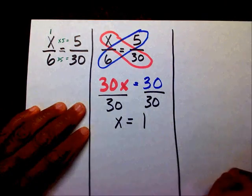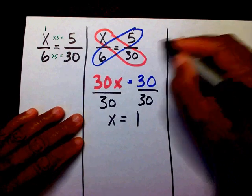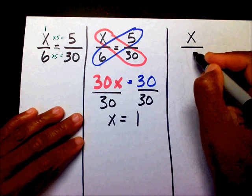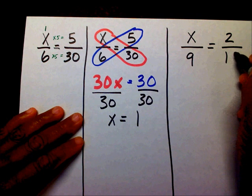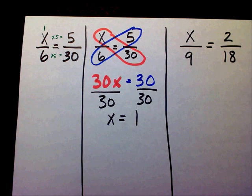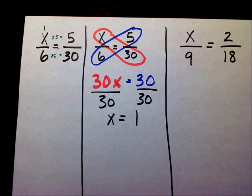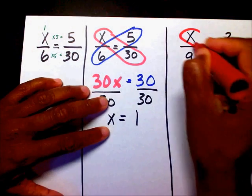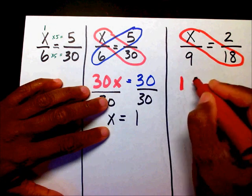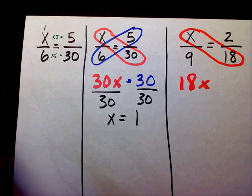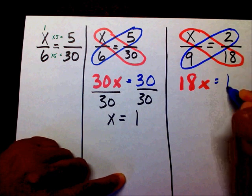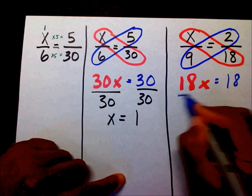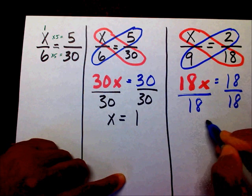Let's do another one. Try this one using the same method: x over 9 equals 2 over 18. We're going to multiply x times 18, which is 18x, and then multiply 9 times 2, which is 18. Divide both sides by 18, so x equals 1.